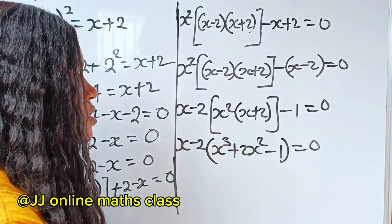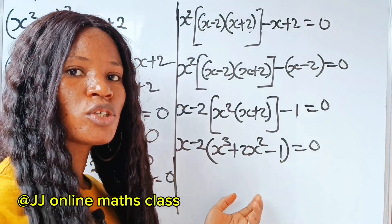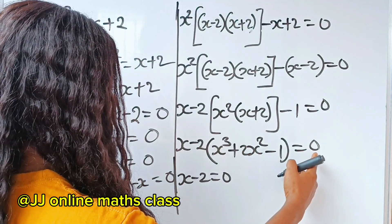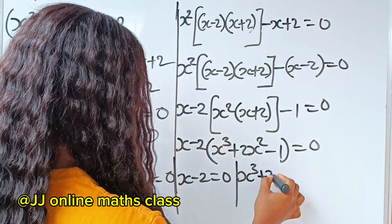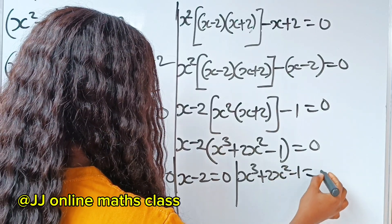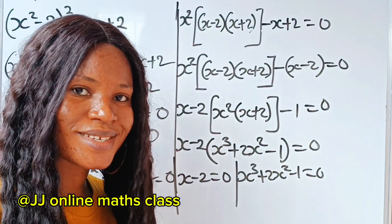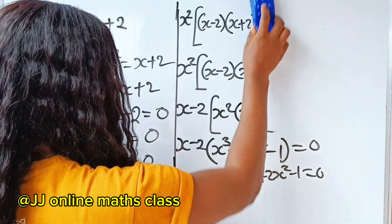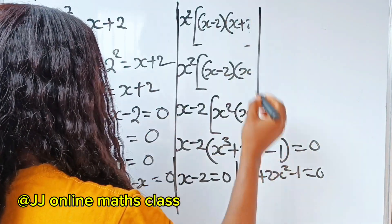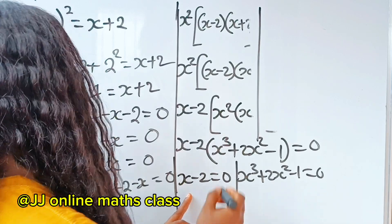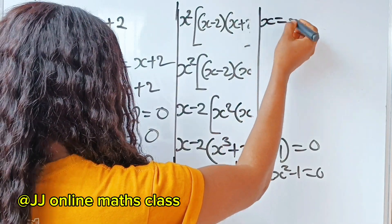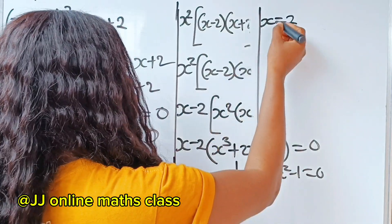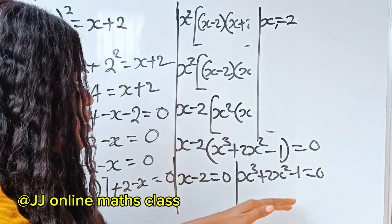When you look at this, we have two factors in this equation. We have x minus 2 is equal to 0, and we have x to the power of 3 plus 2x squared minus 1 is also equal to 0. Let's solve for the first part. From the left-hand side, we see that x is equal to — the minus 2 crosses to become plus 2 — so x equals 2 is the first value of x.